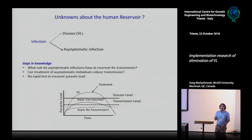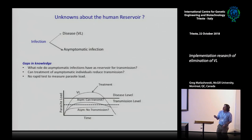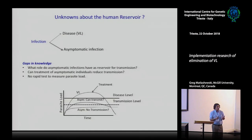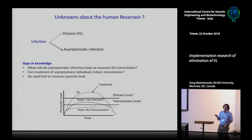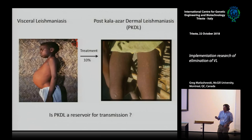What's known about the human reservoir and transmission — for example in Nepal, where do these new cases come from? We know visceral leishmaniasis cases can transmit the disease, but we don't know whether asymptomatic people who are infected but have an immune response can also transmit. That's something we don't know. The evidence is now clear that sand flies can pick up parasites from PKDL cases, and studies are also looking at transmission from asymptomatic infections.